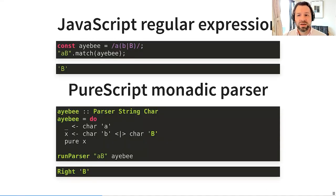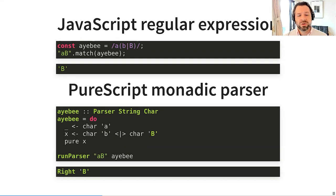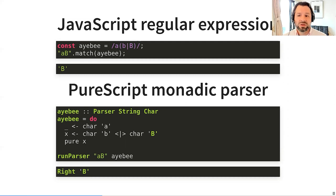Let's look at an example of matching a pattern with a monadic parser. Here is the same pattern expressed with a regular expression and with a monadic parser. The pattern we want to match is a string that starts with a lowercase 'a' character and then has either a lowercase 'b' or an uppercase 'B' — and we also want to capture that 'b' character. In the regular expression, we capture the 'b' by surrounding it with parentheses. In the monadic parser, we capture it by returning it from the monadic computation. It's in the form of a do block. On the first line, we match a literal 'a' character and throw it away by binding it to the underscore variable. The parser monad has state inside it which tracks the current position in the input string, and successfully matching 'a' steps the position forward by one character.